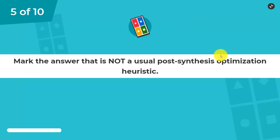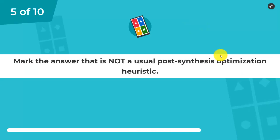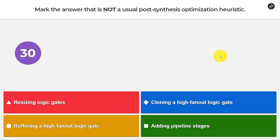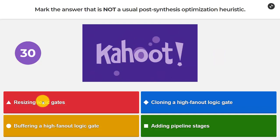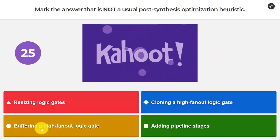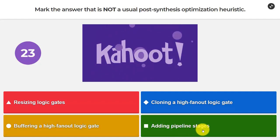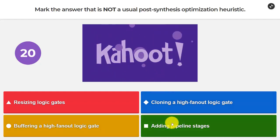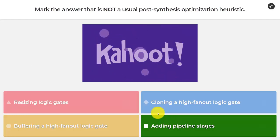Question number five: Mark the answer that is not a usual post-synthesis optimization heuristic. Resizing logic gates, cloning a high fan-out logic gate, buffering a high fan-out logic gate, or adding pipeline stages. I think it's going to be adding pipeline stages.